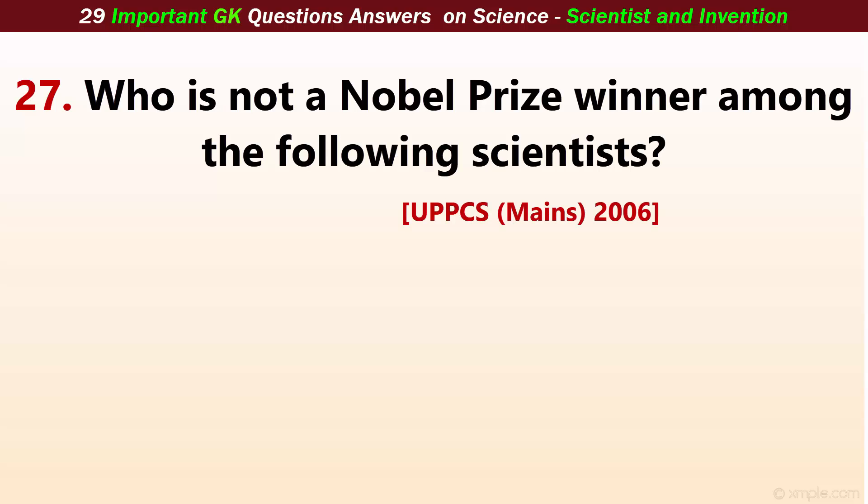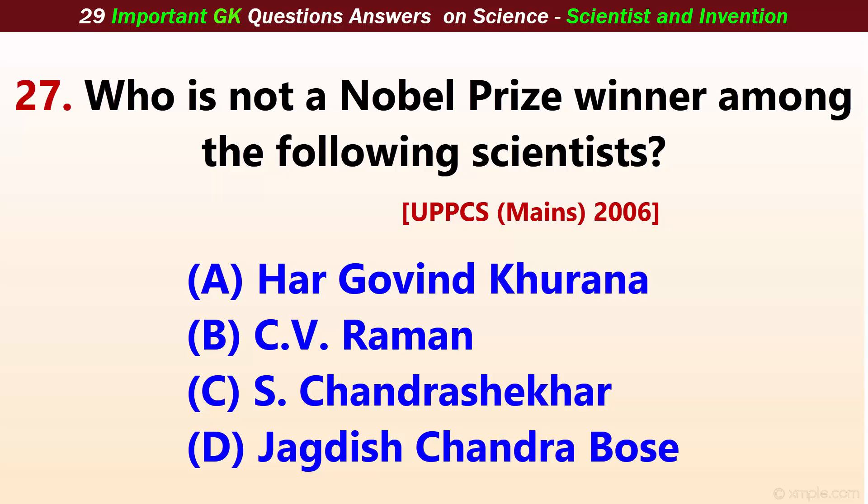Who is not a Nobel Prize winner among the following scientists? Answer D: Jagadish Chandra Bose.